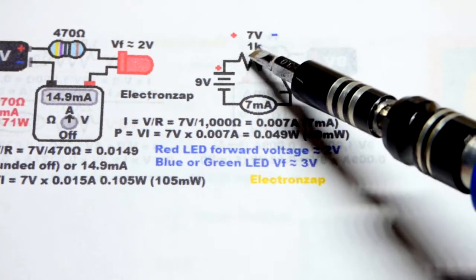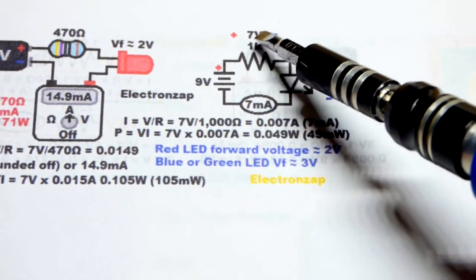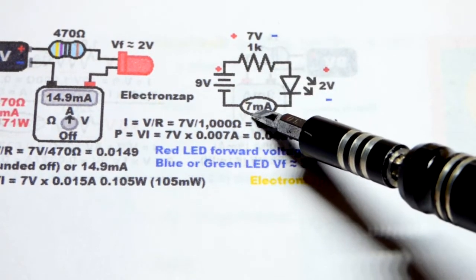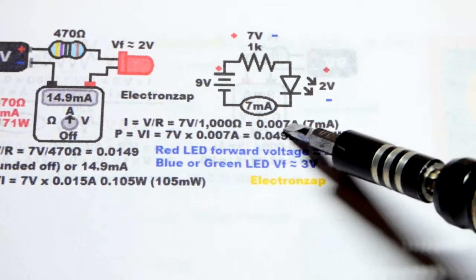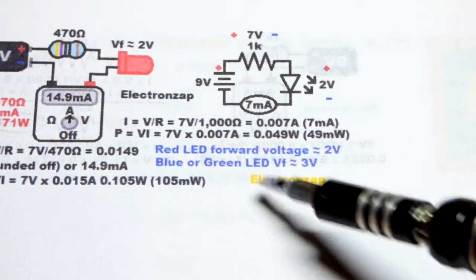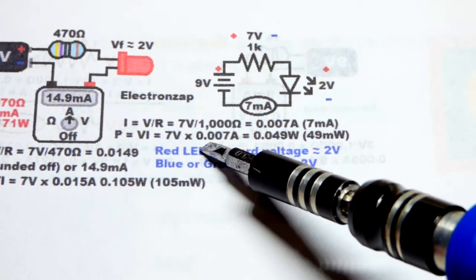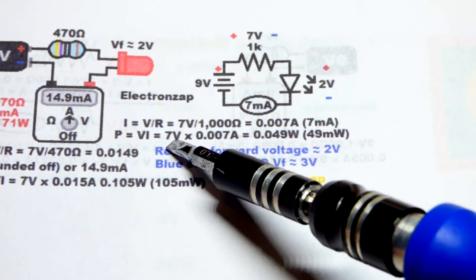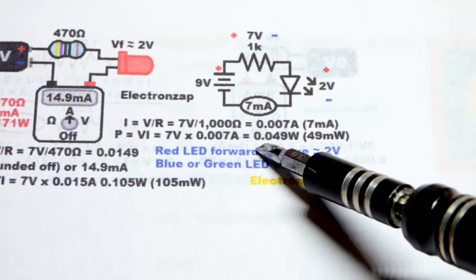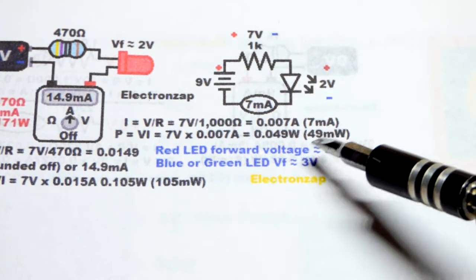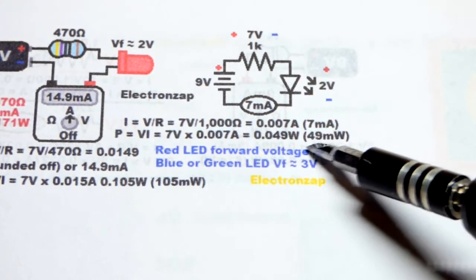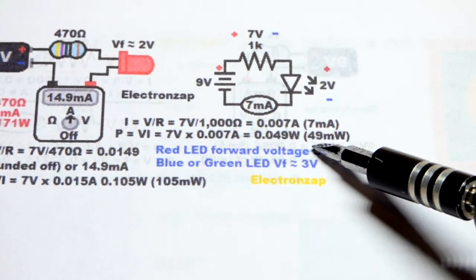If it's a 1000 ohm resistor, each volt, so seven volts will be one milliamp current, so seven milliamps total right there. You take that amount of current times the voltage, seven volts, and we got about 0.049 watts, about 50 milliwatts approximately. Well below the 0.125 watts.